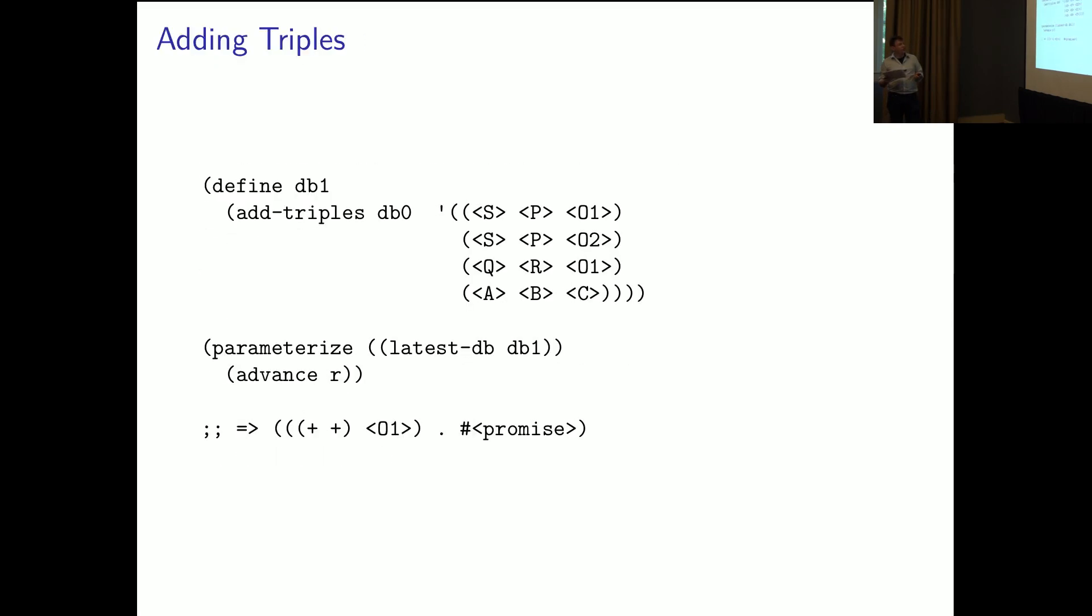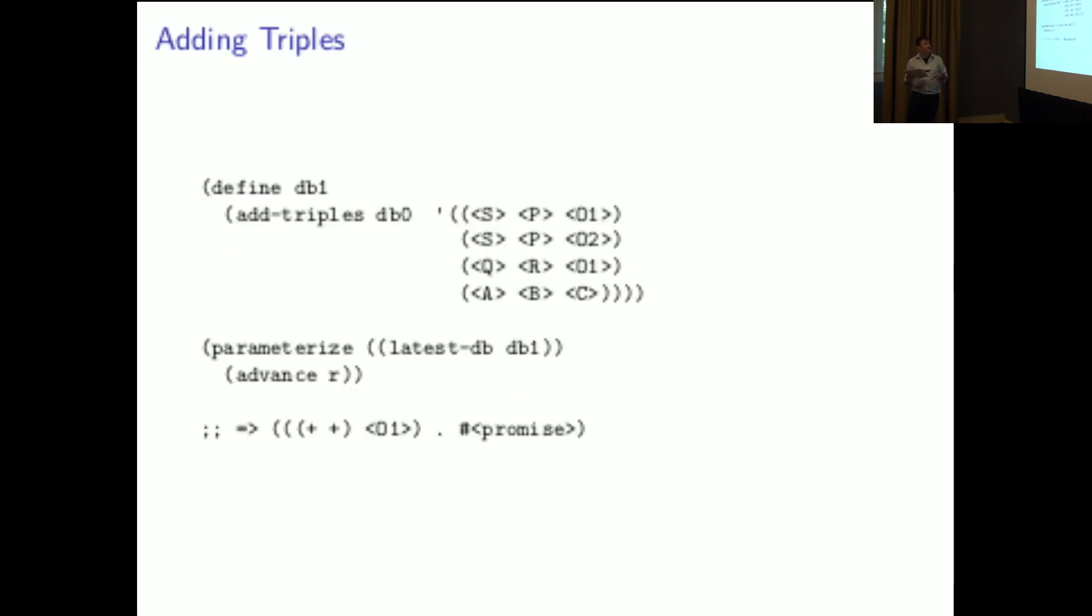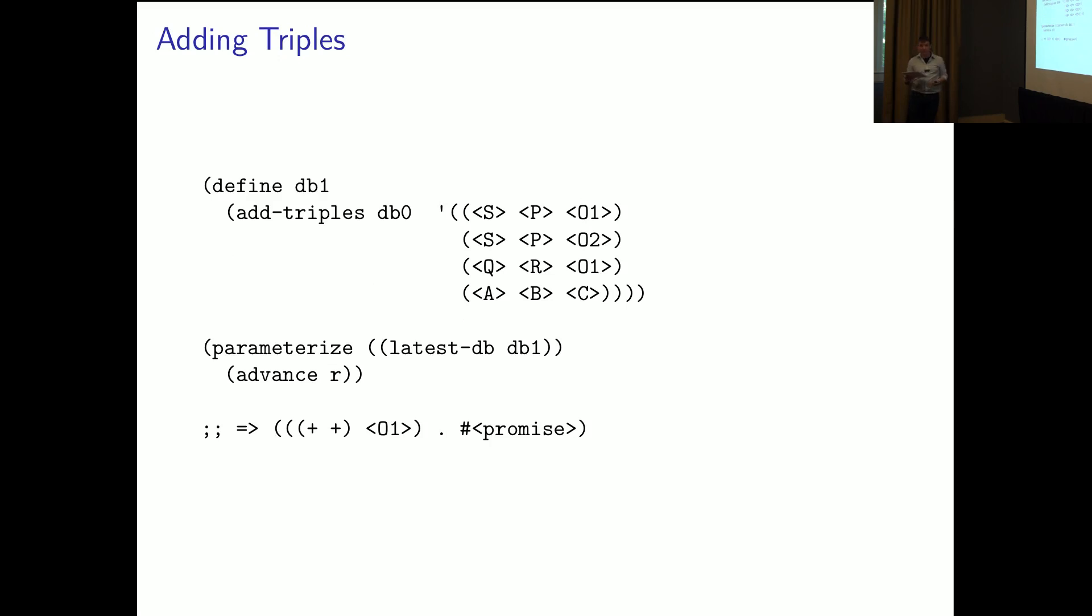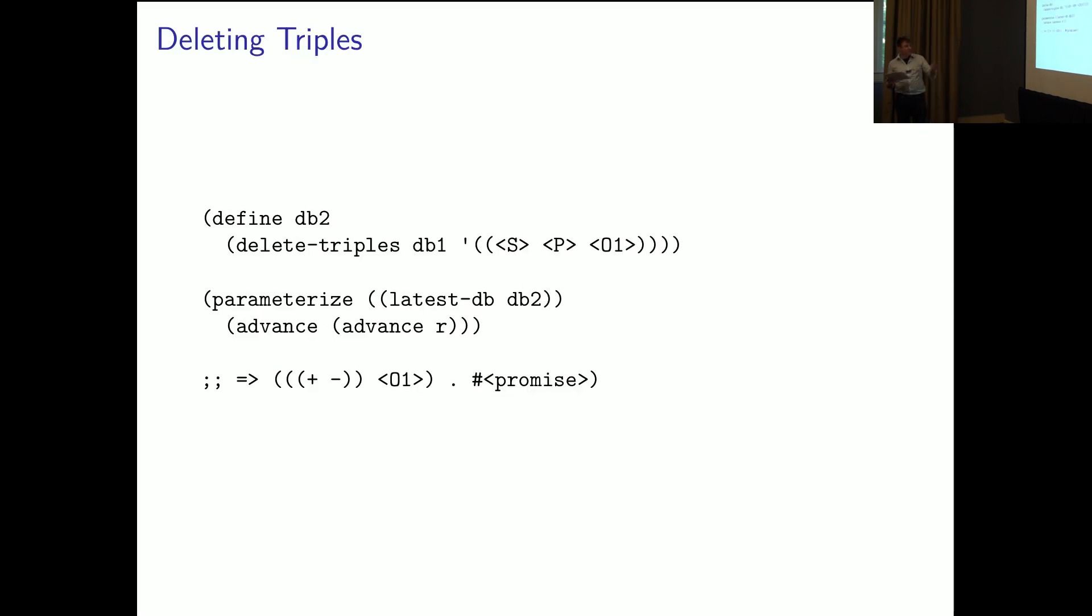We're in practice. We're going to want to know if we had all of the solutions or if one of the solutions was removed. For the first query, there were no solutions. So, we're going to add some triples to that solution and advance to the delayed stream. And if we delete a triple that contributed to one of our solutions, then the solution will be returned with a negative delta flag in the next iteration.